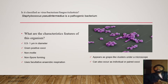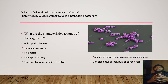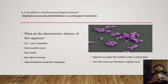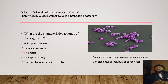Staphylococcus pseudintermedius is a pathogenic bacteria. It is about 0.5 to 1 micrometer in diameter and it appears as grape-like clusters under a microscope, but it can also appear as individuals or paired cocci. It is gram-positive, non-motile, and non-spore forming, and usually uses facultative anaerobic respiration.